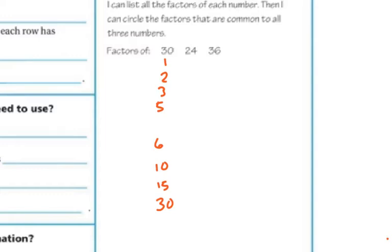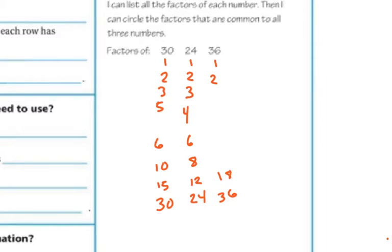Now let's do 24: 1 times 24 is 24, 2 times 12 is 24, 3 times 8 is 24, and 4 times 6 is 24. If I'm looking at 36: 1 times 36 is 36, 2 times 18 is 36, 3 times 12 is 36, and 4 times 9 is 36.